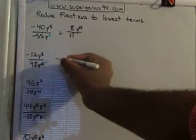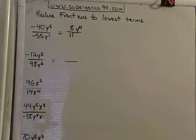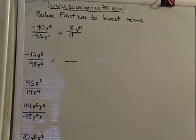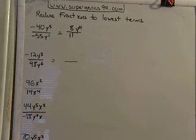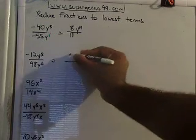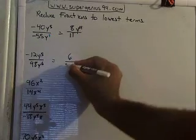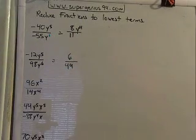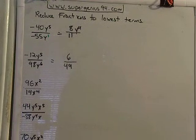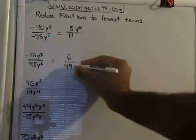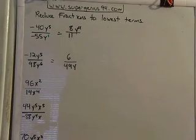Let's look at the next one: negative 12 y to the fifth over 98 y to the sixth. We're going to have a negative divided by a positive. Anytime we have a negative result, we always leave that negative in the top. What number can go into both 12 and 98? How about 2? So 12 divided by 2 is 6, and 98 divided by 2 is 49. We've got y to the sixth in the denominator and y to the fifth in the numerator. So 6 minus 5 gives us 1, or just y to the first power. Since the larger one was in the denominator, your y stays in the denominator.